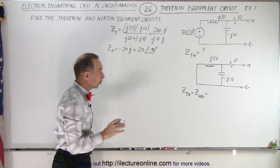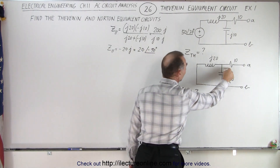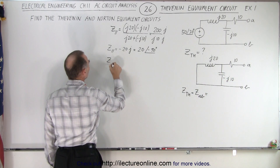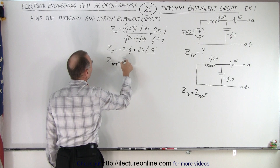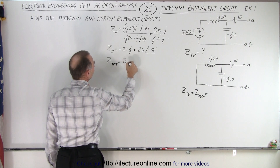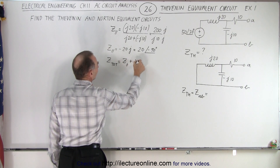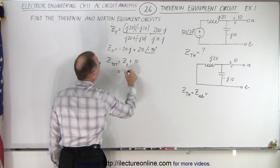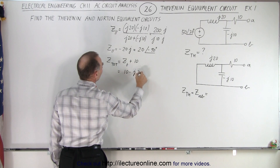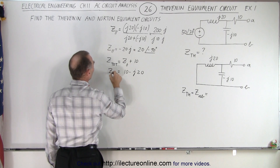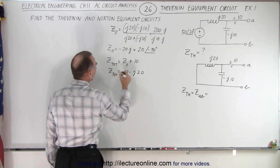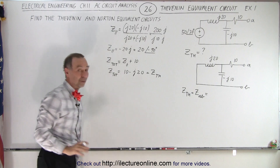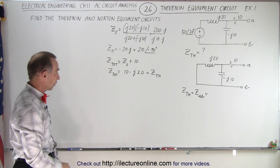Z_parallel equals 20 at a phase angle of -90 degrees. Now we add that to the 10 ohms, so Z_total equals the parallel impedance plus 10 ohms, which gives 10 - j20. That total impedance is also the Thevenin impedance, so now we have Z_Thevenin = 10 - j20.